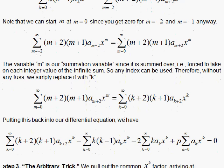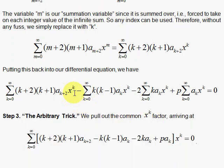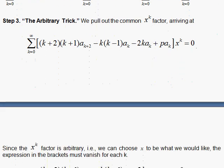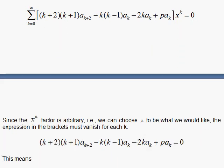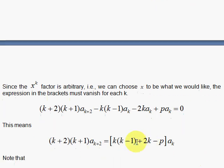Step 3, the arbitrary trick. Now we can factor out the x to the k, and for this to work for all values of x, all the infinite values of x that could be chosen, this has to vanish term by term. So x arbitrary means that has to vanish term by term.